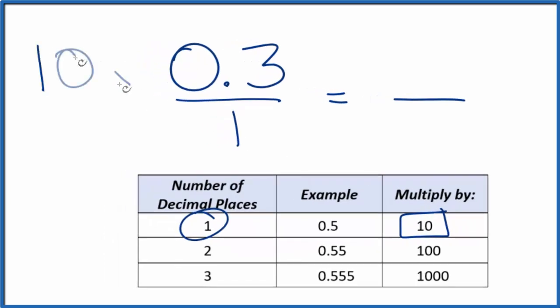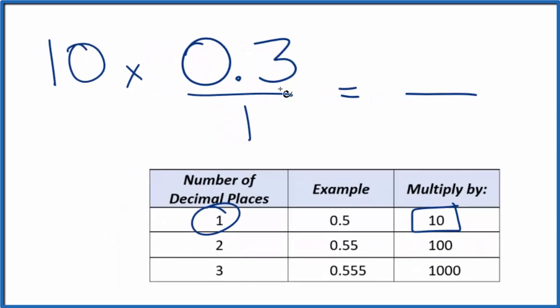So we're going to multiply the top here by 10. When we do that, 10 times 0.3, that gives us 3. So we have a whole number now.